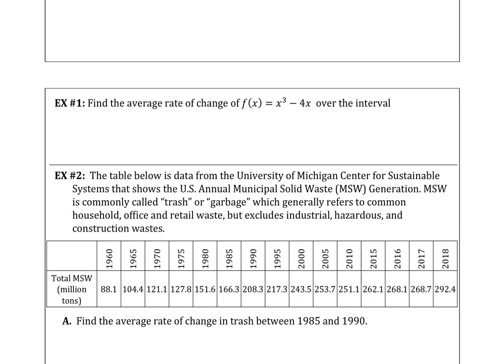For example 1 we want to find the average rate of change for f of x equals x cubed minus 4x over the interval from 1 to 3. So we need to know the function value at 3 and the function value at 1. If you take the equation x cubed and substitute 3 we have 27 minus 12, which gives us 15 for the f of 3. And likewise substituting 1, 1 cubed minus 4 times 1 produces a y value of negative 3.